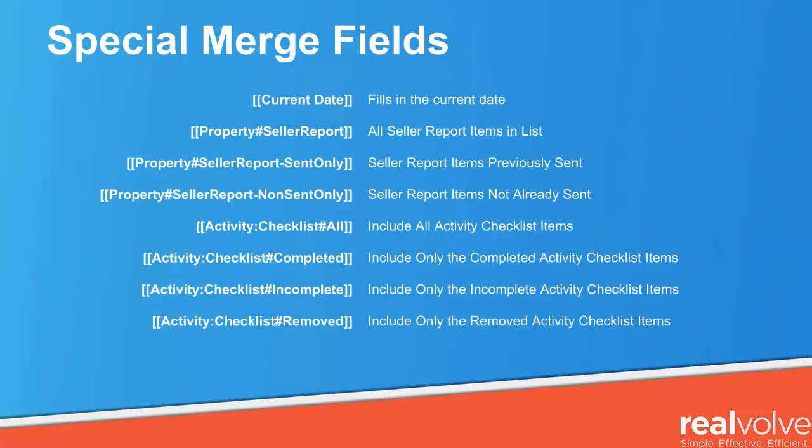We do have some special merge fields. Current date is one of those special fields — it doesn't come from the database, but fills in with today's current date. In addition to the current date, there are three seller report merge fields and four checklist merge fields that are used to display bullet point lists. For the seller report merge field, you can get a combined list of all the items that the seller report tab has in it, a list of previously emailed items, or the recently added items that have not been sent yet.